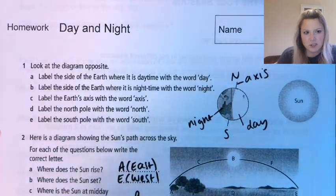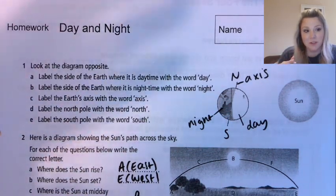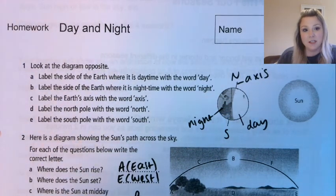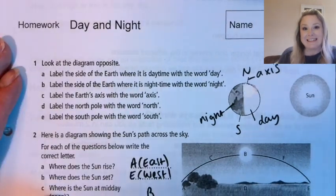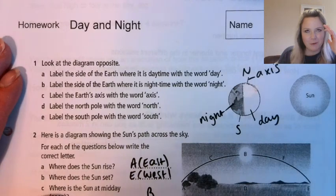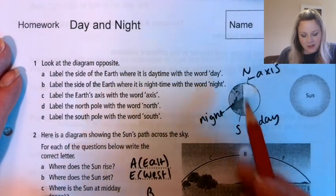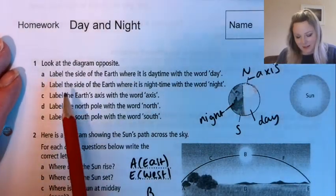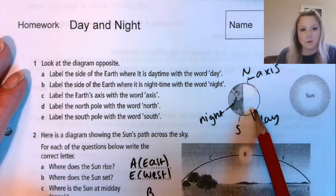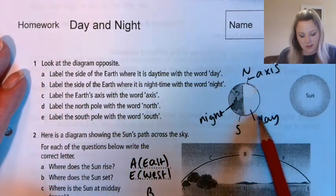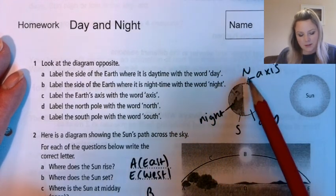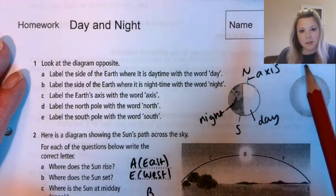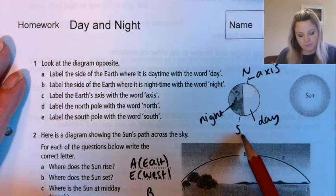I'm going to tipp-ex mine out just to show you — you don't have to if you don't have tipp-ex, that's fine because we are going to be talking about that today anyway. Now, back to what the question was actually asking: label the side of the Earth where it's daytime — that's the side facing the sun — and nighttime is the side facing away from the sun. The axis is the imaginary line up and down the middle, from north pole to south pole.